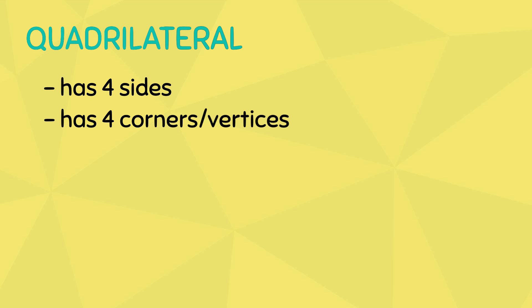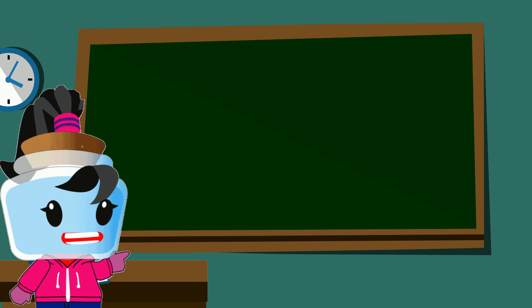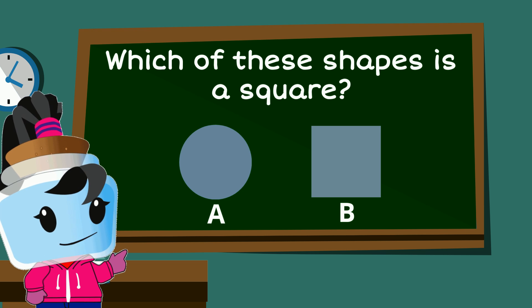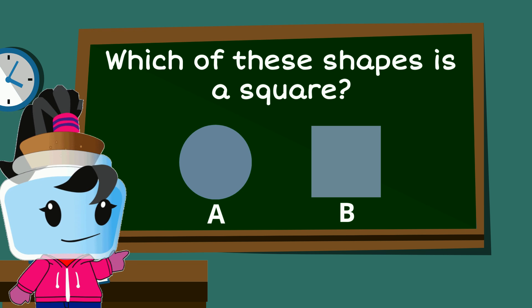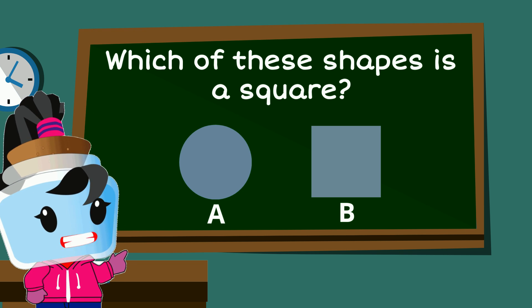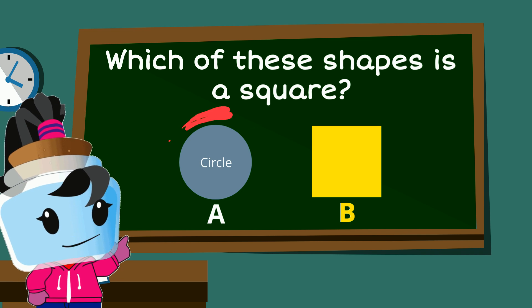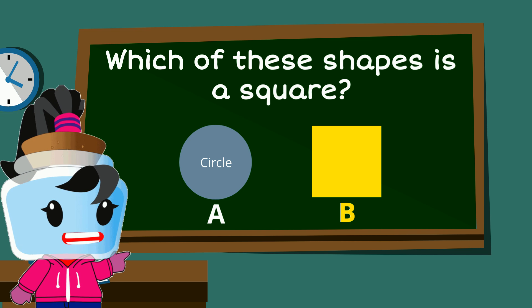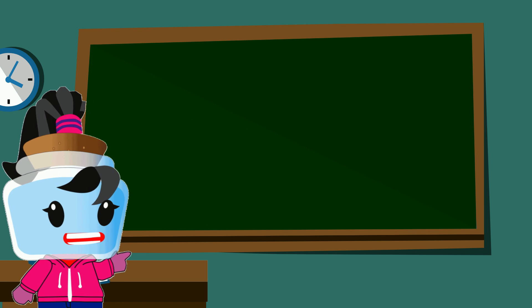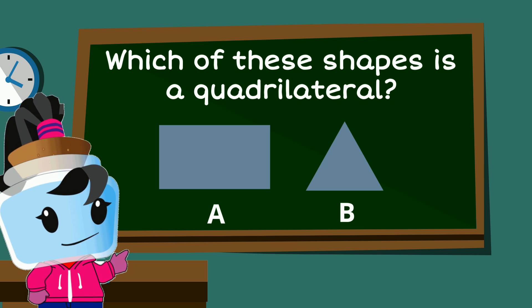Let's do some quick practice before we end. Which of these shapes is a square? The answer is B. Shape A is a circle.